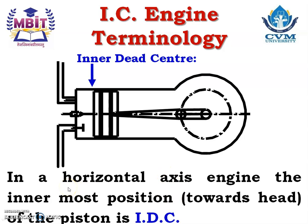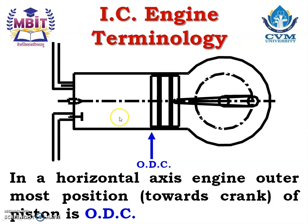If it is a horizontal engine, the innermost position or the position of piston towards the cylinder head is known as the inner dead center. And in the same horizontal axis engine, the outermost position or the position of piston towards the crank or away from the cylinder head is known as the ODC, that is the outer dead center.